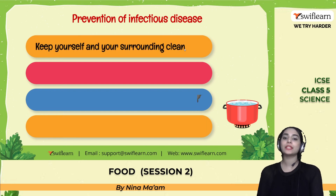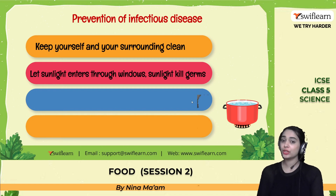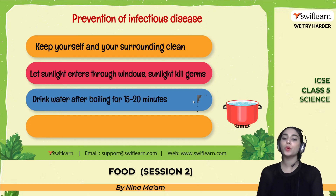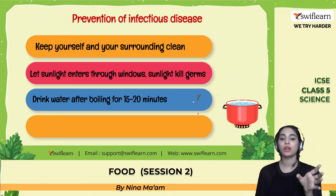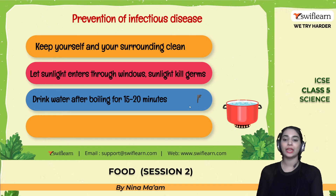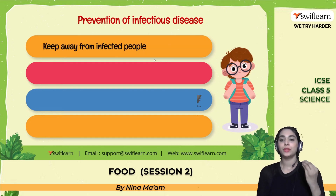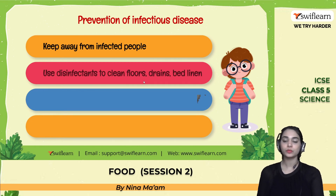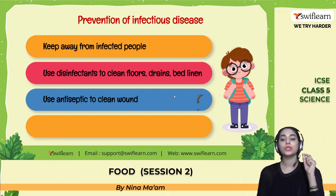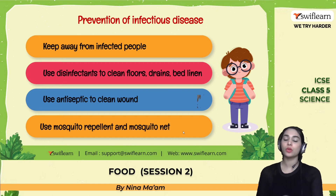For prevention of infectious disease: keep yourself and your surroundings very clean; let sunlight enter through windows, as sunlight kills germs; drink water after boiling for 15 to 20 minutes; spray insecticide to prevent flies, fleas, and mosquitoes. Also keep away from infected people, use disinfectants to clean floors, drains, and bed linen, use antiseptic to clean wounds, and use mosquito repellent and mosquito nets.